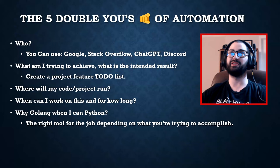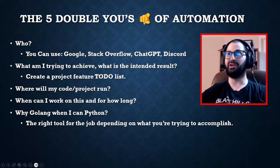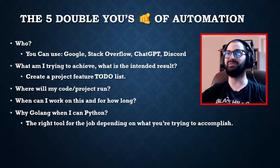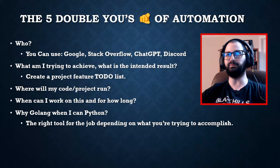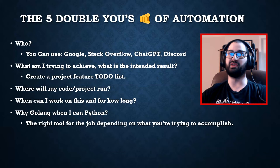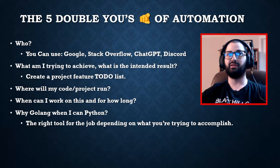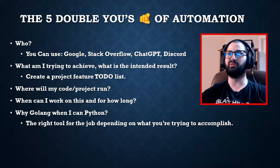A quick who, what, where, when, and why — the five W's of automation. The 'who' is you, and you can use Google, Stack Overflow, ChatGPT, Discord — tons of resources to make you a more powerful developer. Think about what you're trying to achieve and the intended result. Maybe create a project feature to-do list, a separate to-do.txt file, or put to-dos directly in your code as comments to map out what you want to accomplish first.